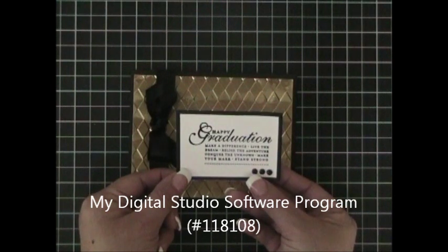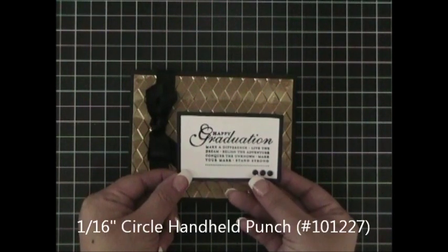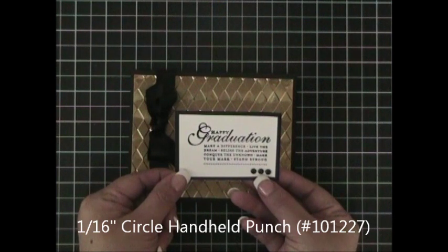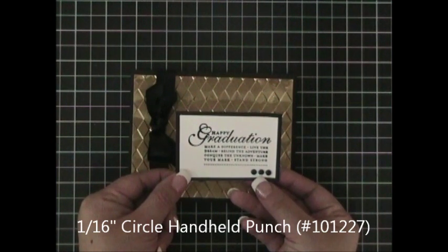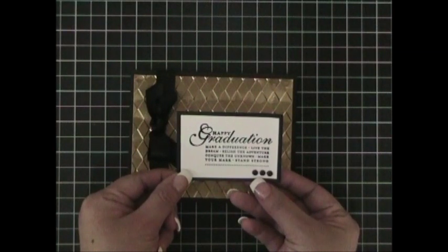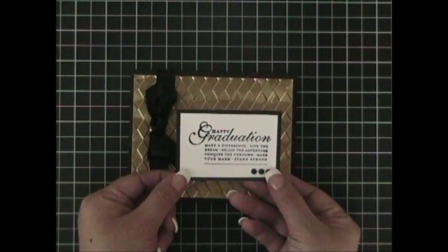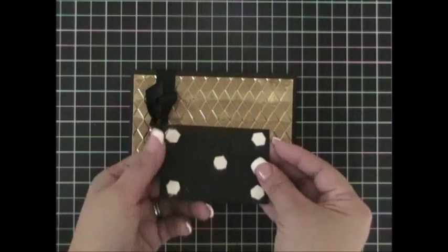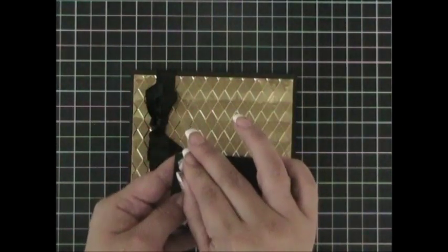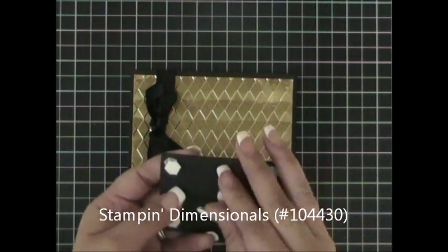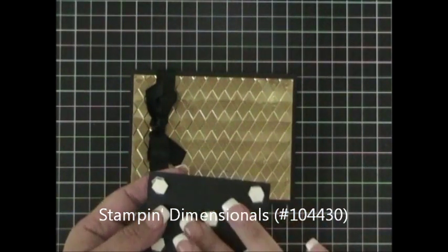After I attached this piece to the basic black cardstock, I took my 1/16 handheld hole punch. I punched three holes in the lower right hand corner and I ran three black mini brads through them, as you can see. And so then what I did was I placed stamping dimensionals on the back of it.